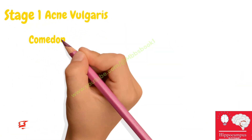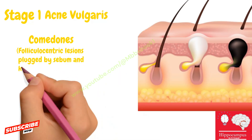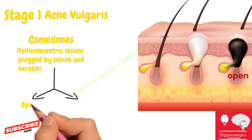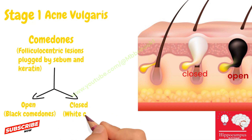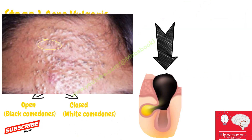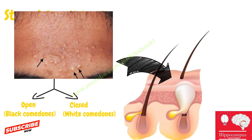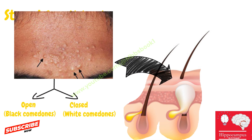In stage one the lesion is called a comedone — a folliculocentric lesion plugged by sebum and keratin. Comedones are of two types: open comedone, also known as blackhead, and closed comedone, also known as whitehead. If the follicular opening is wide, atmospheric air oxidizes the comedone making it black. In closed comedones the opening is narrow, so there is no oxidation and it appears white.